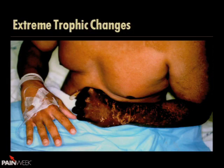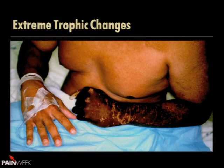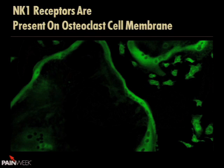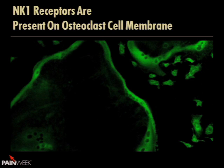We also see trophic changes — sometimes very extreme, horrifying presentations. You can have dystrophic changes of skin, nails, and hair; osteopenia of bone, or what we call Sudeck's atrophy. We see receptors for cytokines and other inflammatory mediators on all of these tissues. These subtle neurochemicals may be what mediates these dystrophic changes.